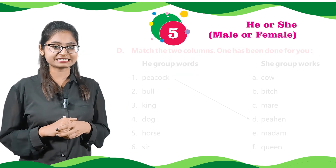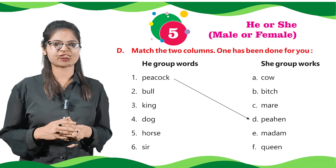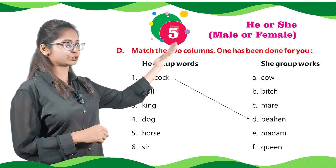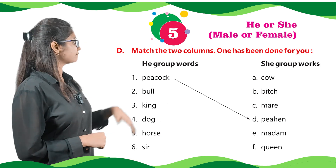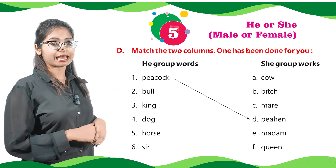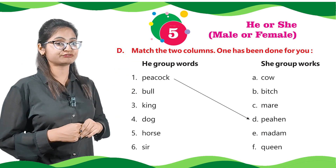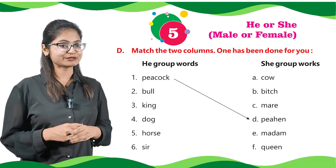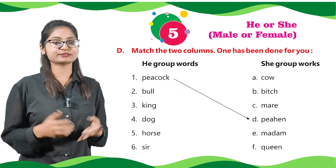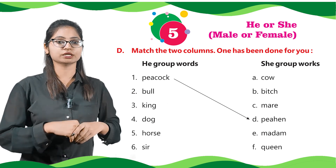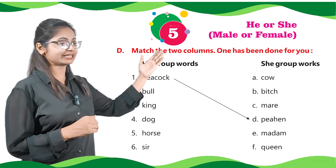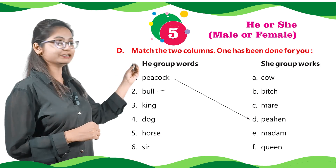Let's move to Part D: match the two columns. One has been done for you. We have two groups — he group words and she group words. Number one is peacock, and in the other group at number four, option D is peahen — peacock is matched to peahen. Number two is bull — the correct word from the other group is A, cow — so we will match bull to cow.